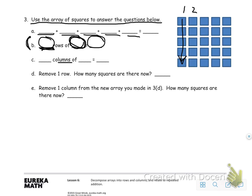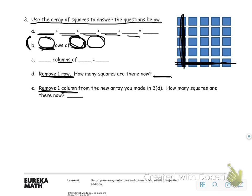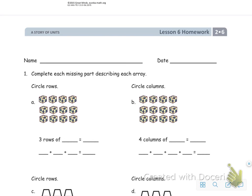Next it says to remove a row — simply cross out a row and see how many squares are there now. Then remove one column — just erase or cover up one of the columns and answer how many squares are there now.